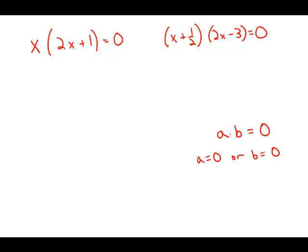Looking at the first equation, the only way to get a product of 0 is either x equals 0 or 2x plus 1 equals 0. Solving that gives x equals negative 1 half. So x equals 0 or x equals negative 1 half — those are the only two mathematical possibilities for the first equation.